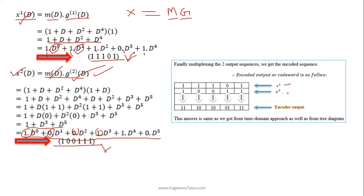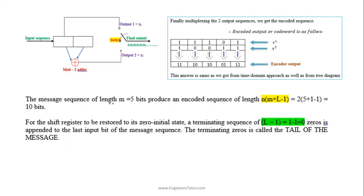Finally, multiplexing the two output sequences x1 and x2: we take x1 and x2 together — for input bit 1, the output is 1 1; for each subsequent input bit we read the next x1 and x2 pair and combine them to get the encoder output. This answer is the same as what we obtained using the time domain approach or graphical representations like tree diagram, state diagram, or trellis diagram.